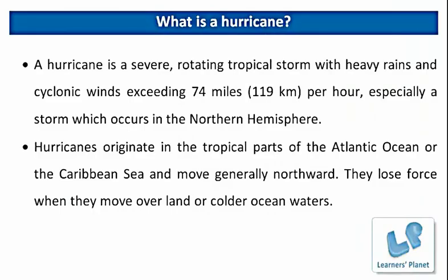Let us start with today's interesting session and see what is actually meant by hurricane. A hurricane is a severe rotating tropical storm with heavy rains and cyclonic winds exceeding 74 miles, that is 119 km per hour, especially a storm which occurs in the northern hemisphere. A hurricane is a tropical storm with winds that have reached a constant speed of 74 miles per hour or more. The eye of the storm is usually 20 to 30 miles wide and it may extend over 400 miles.